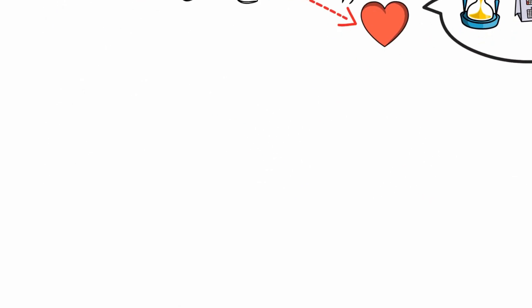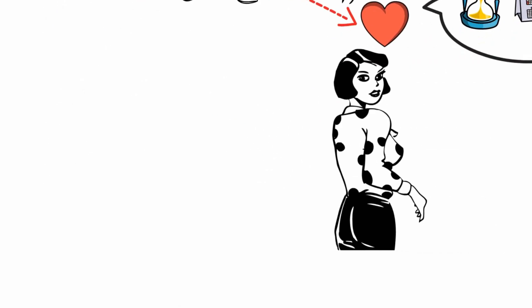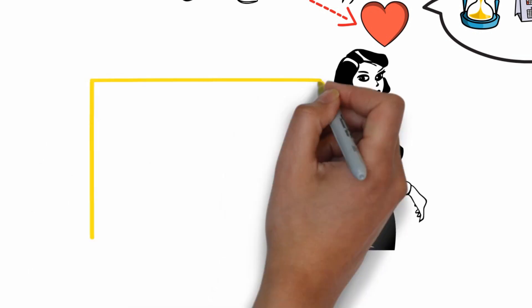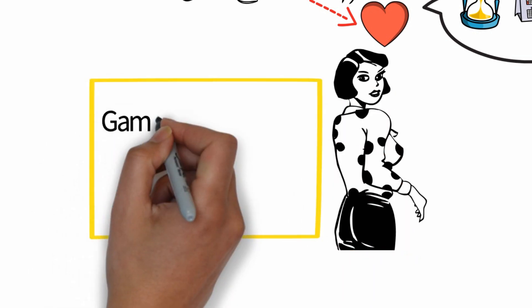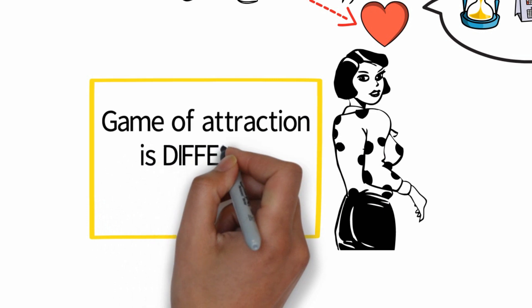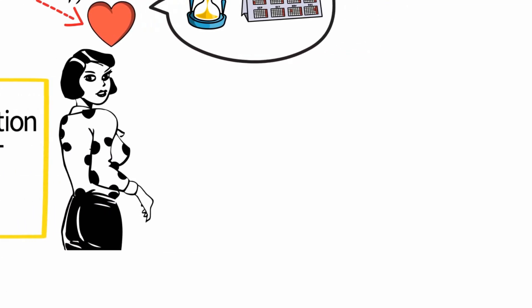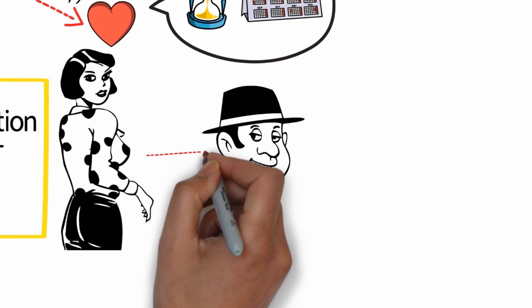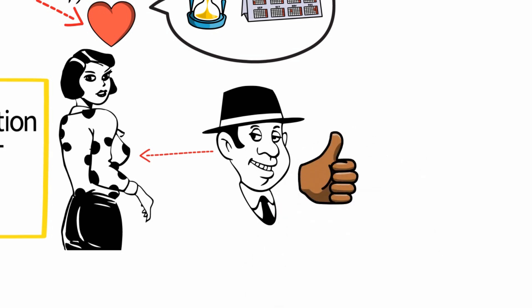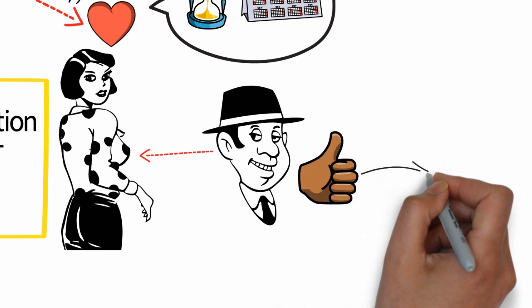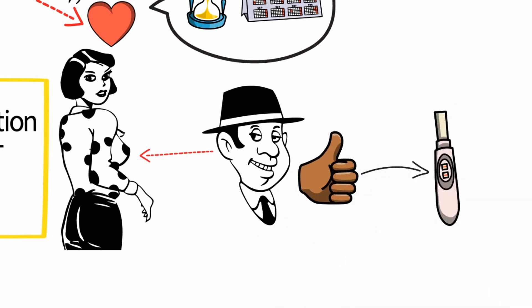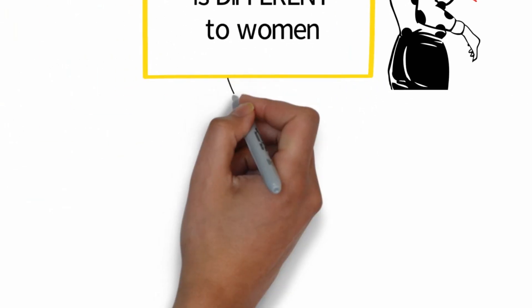Now you might say, but women can also be initially physically attracted to men. The thing is, the whole game of attraction is different to women. A man sees a woman, decides in a split second if she's physically attractive, and then sees her as a potential mate, all happening in under two seconds.